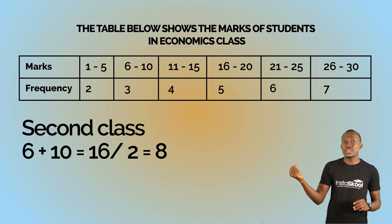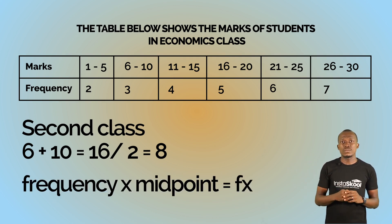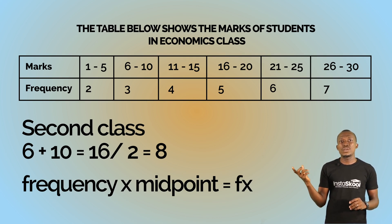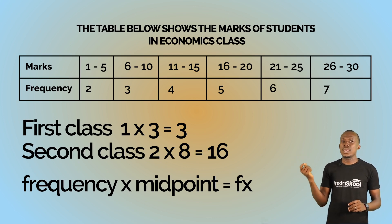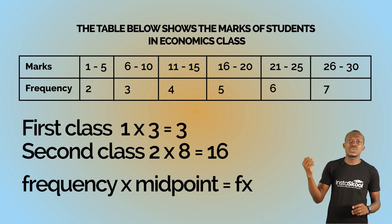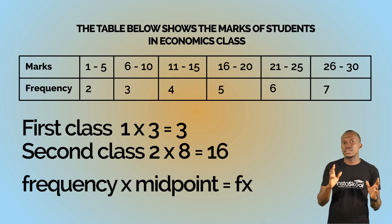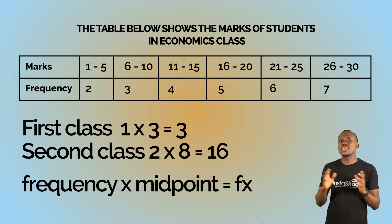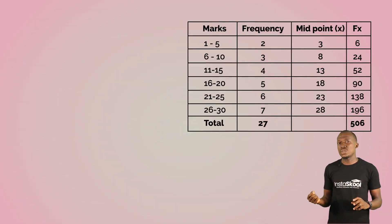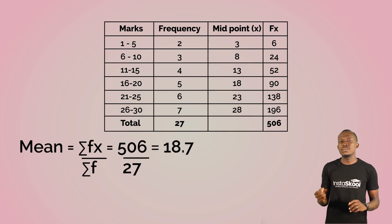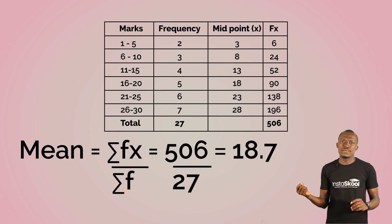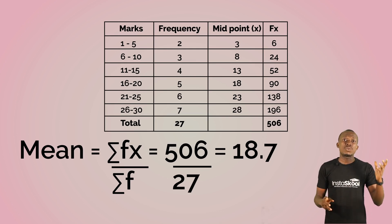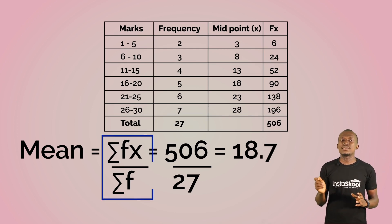The next step is to multiply the frequencies times the midpoints to get fx, that is f times x. For the first one we have 1 times 3 which gives us 3; for the second we have 2 times 8 which gives us 16; down to the last one, 7 times 28. When this is done, we add all our fx together and all our f together, giving us summation fx and summation f. The last step is to divide summation fx by summation f.